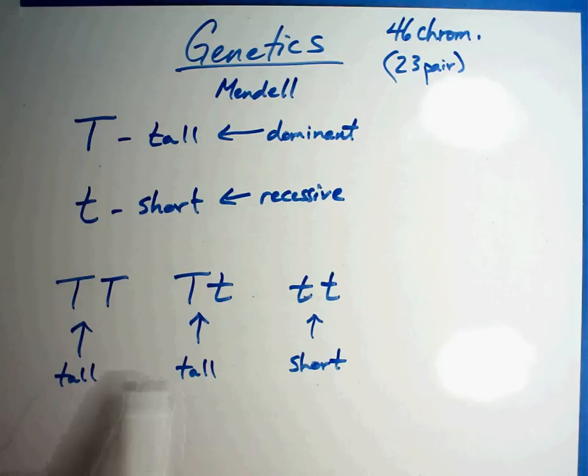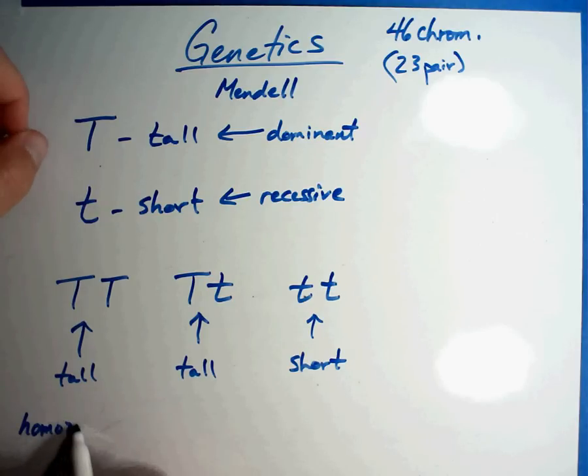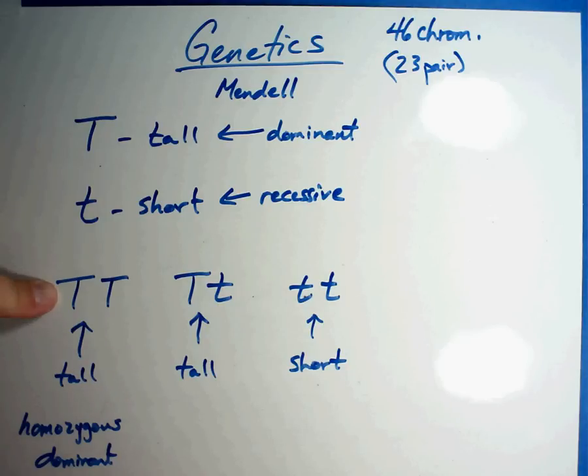Now, how can you have two varieties of tall? In this case, you get a term that goes with this. First, this is called a homozygous dominant gene. Homozygous dominant is what this one is right here. This one is what is called homozygous recessive.